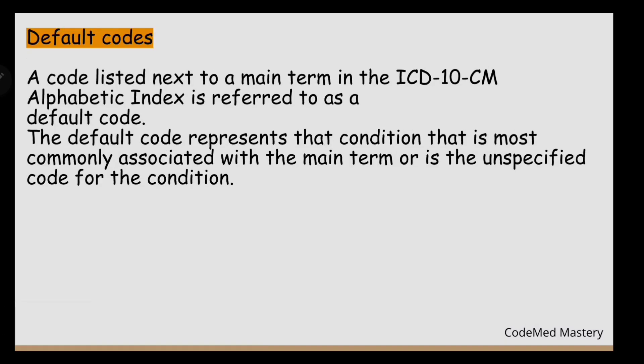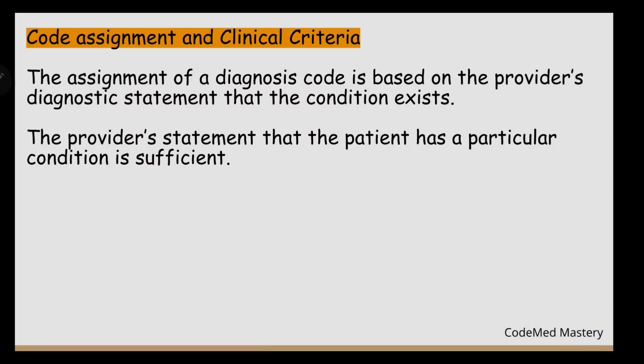Next are default codes. The code listed next to a main term in the ICD Alphabetic Index is referred to as a default code. The default code represents the condition most commonly associated with the main term — we assign a default code if a condition is documented in the medical record without any additional information. Finally, code assignment and clinical criteria: the assignment of a diagnosis code is based on the provider's diagnostic statement that the condition exists. The provider's statement that the patient has a particular condition is sufficient for code assignment.